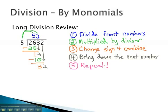We divide 5 into the 32, and it goes in there 6 times. 5 times 6 is 30. Multiplying by the divisor, 5 times 6 is 30. And we change the sign and combine to get 2.